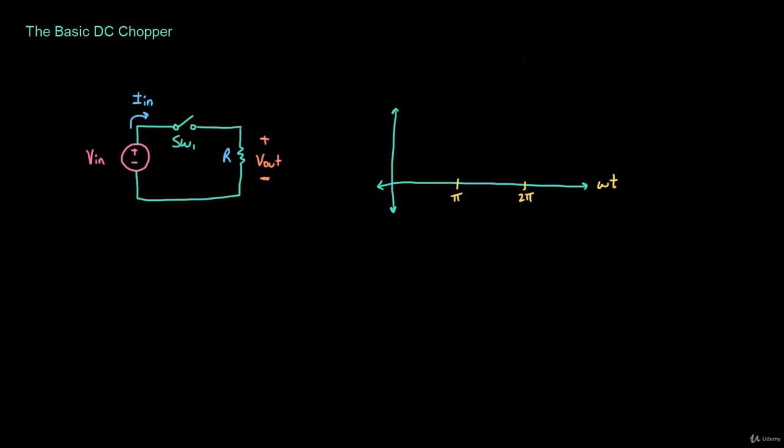In this lecture we're going to be talking about the basic DC chopper. Remember that a DC-DC converter can either step the voltage up or down depending on the application. The easiest way to step the voltage down is to simply chop the input voltage with respect to the output voltage.